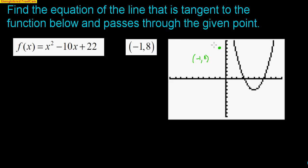I could start drawing some lines to estimate where the point of tangency might be, but it's clearly not going to be right at that point. It looks like it's going to be somewhere down around here. Also, because the function goes up forever, there might be a second tangent line — so there could possibly be two answers.